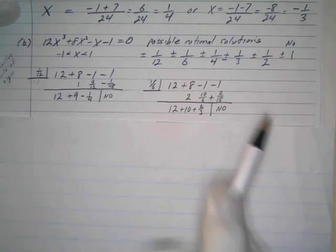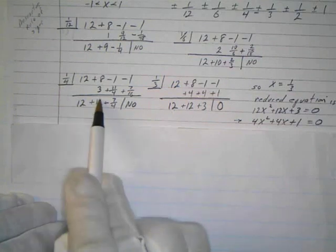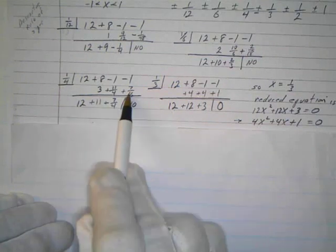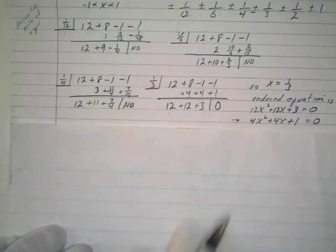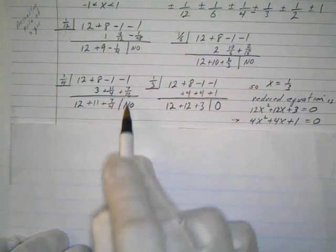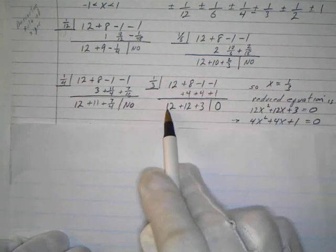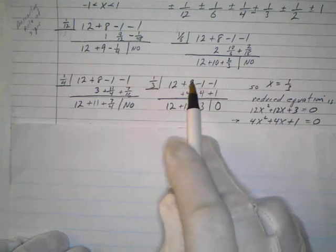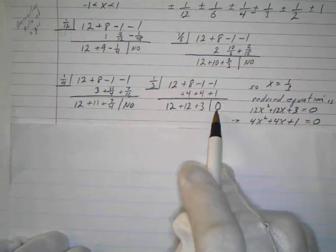Then I try 1/4. Bring down the 12. 1/4 of 12 is 3, that's 11. Work with all the fractions, but it doesn't work out evenly. Then I go to 1/3. Bring down 12. 1/3 of 12 is 4. 8 plus 4 is 12. 1/3 of 12 is 4 again. -1 plus 4 is 3. 1/3 of 3 is 1. Aha! Zero. So that worked out.